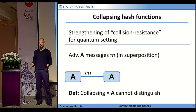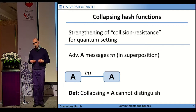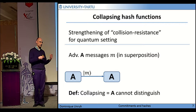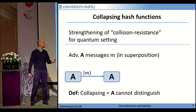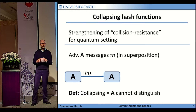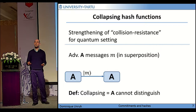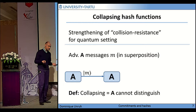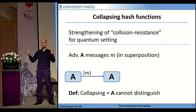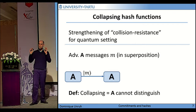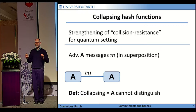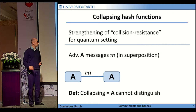Let me now tell you what a collapsing hash function is. I will show you the definition here a bit differently than it is in the paper, because after the paper I came up with a bit more intuitive way of phrasing it, but it can be easily seen to be equivalent. So consider a hash function, and we want to generalize the idea of being collision resistant to the quantum setting. In the classical setting, collision resistant means we cannot find two values that have the same hash at the same time. In the quantum setting, as we have seen, this is not enough.